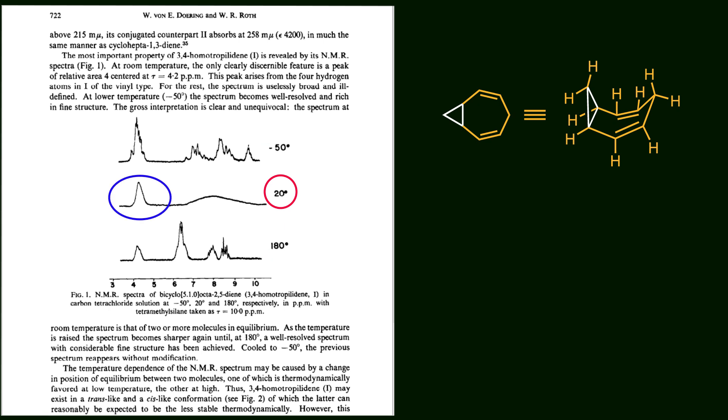For now, let's focus on the signal at room temperature. 3,4-Homotropylidene consists of seven different hydrogens, but at room temperature, only one broad signal is observed. This can be explained by the dynamic behavior of the molecule, as the rapid Cope rearrangement causes the NMR signal to reflect the average structure of the two isomers.